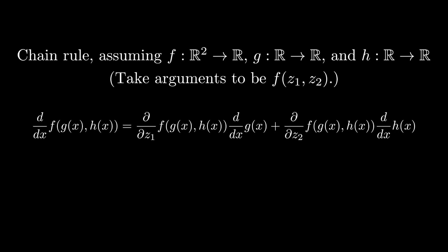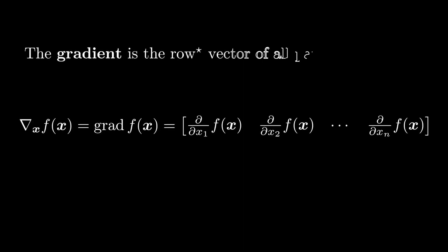Applying the chain rule to arbitrary functions from R^n to R^m is a little bit more complicated, and we'll get to that down the road. Now let's talk about gradients. As we discussed before, the gradient is one of the key objects in machine learning. The gradient is just the row vector that we would get if we took all of the partial derivatives and put them into one object.